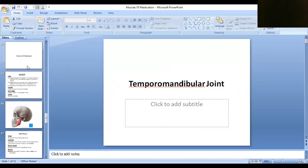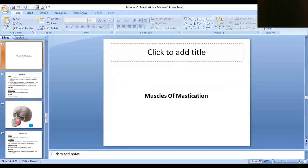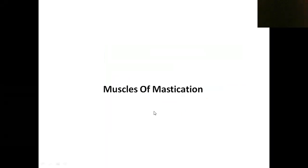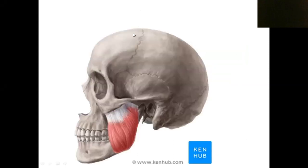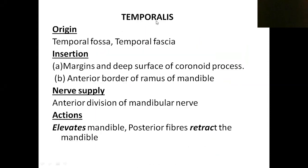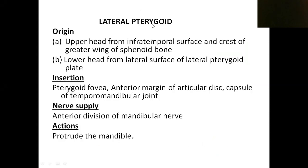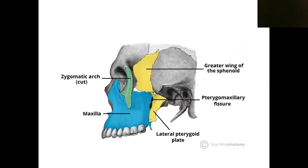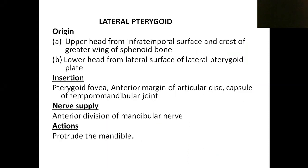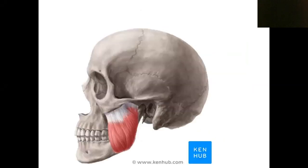Now we are going to see the masticatory muscles. There are mainly four muscles: masseter, temporalis, lateral pterygoid, and medial pterygoid. So what are the features of these muscles?